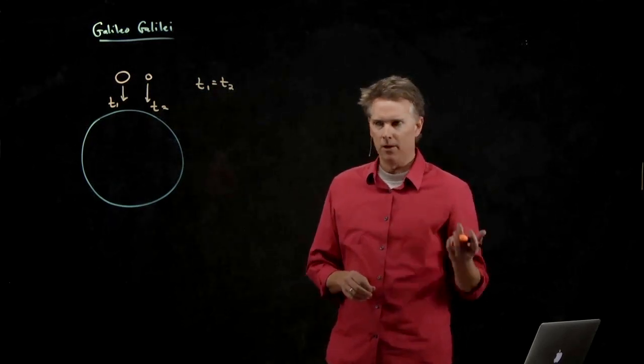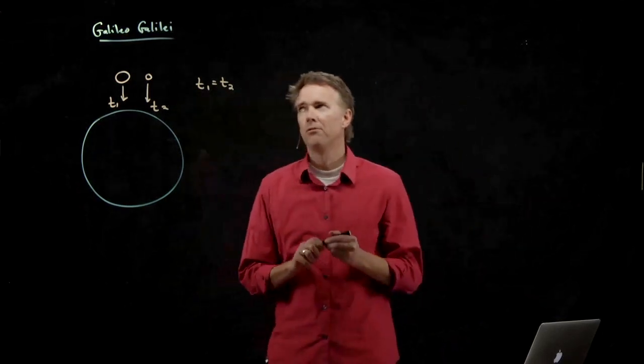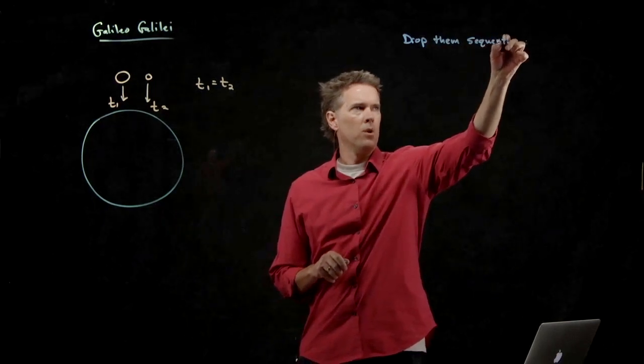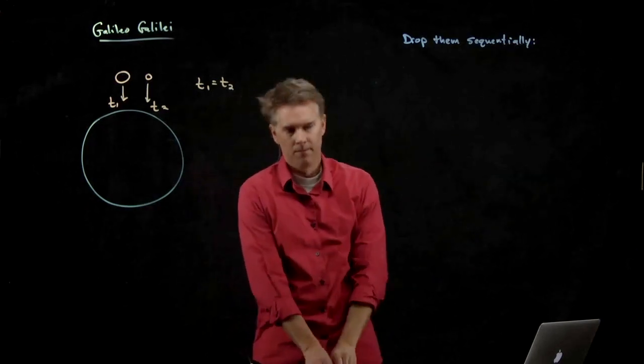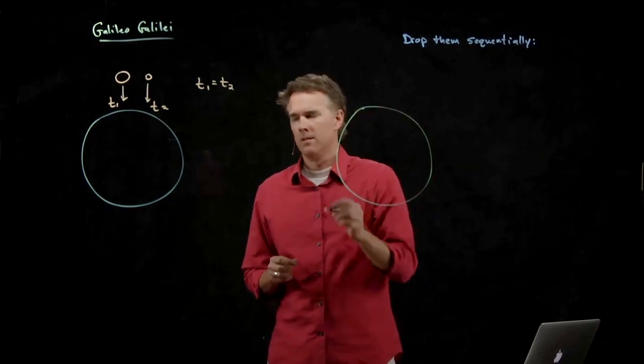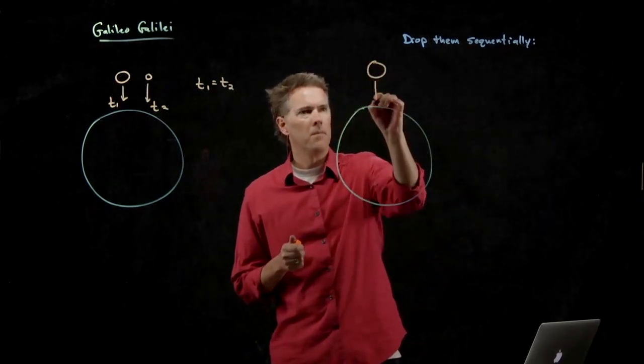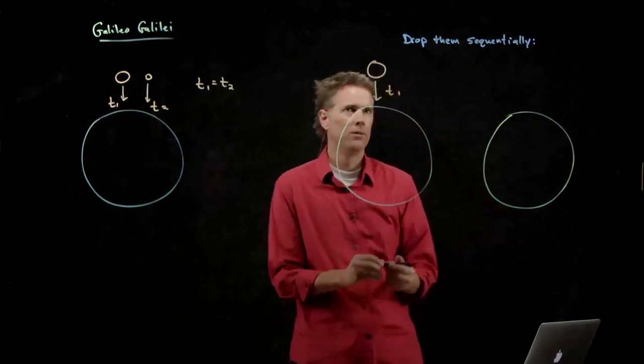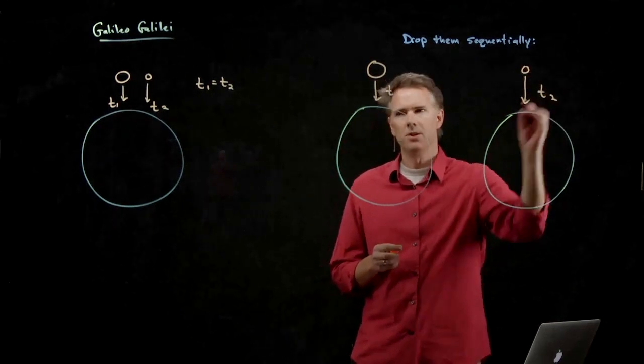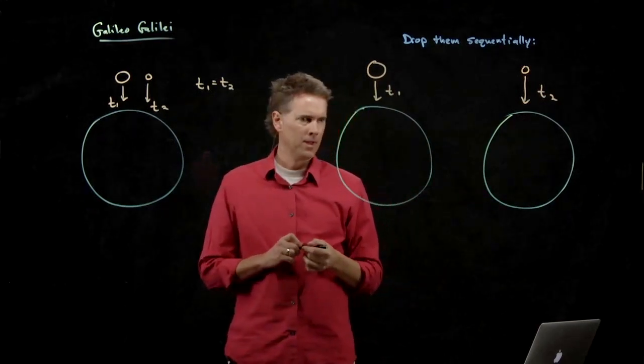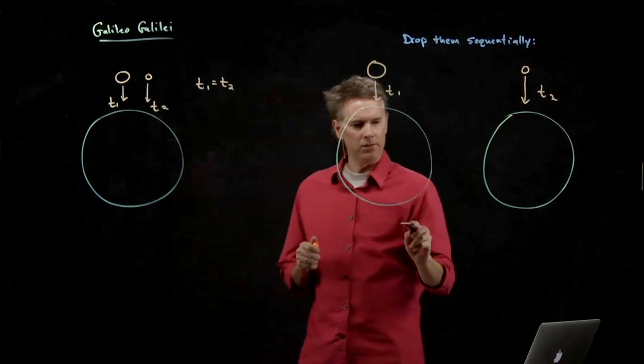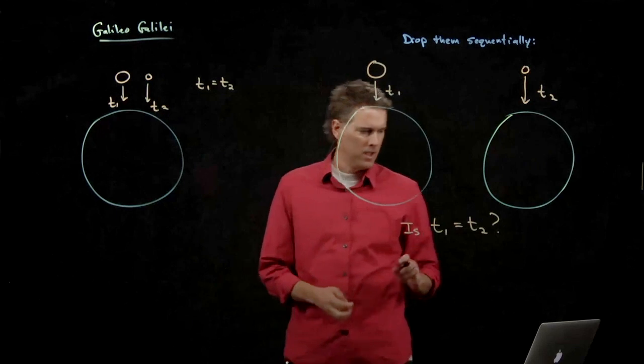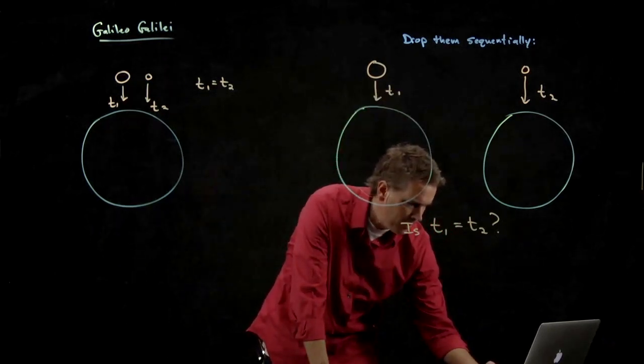But now let's redo Galileo's experiment and we're going to do two steps. Let's drop them sequentially. So we're not going to drop them at the same time, we're going to drop number one and we're going to measure T1. And then later on we're going to do the second experiment. We're going to drop number two and we're going to measure T2, and now let me ask you a question. Is T1 equal to T2? And let's ask the people at home and I'll set up your polling so you can answer.